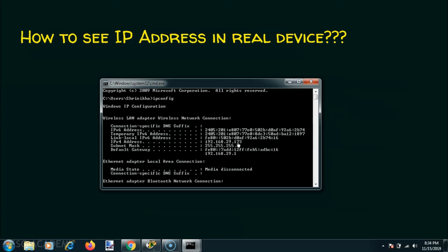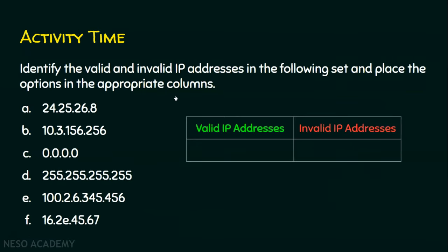So far we have seen how to view an IP address on a real device. There is an interesting activity for you. We are required to identify the valid and invalid IP addresses from a given set. Place the options in the appropriate columns — one column for valid IP addresses and another for invalid IP addresses. If you find A is a valid IP address, mark it in the valid column; if B is invalid, mark it in the invalid column. You should know why they are valid and why they are invalid. Please pause this video and note down your answers.